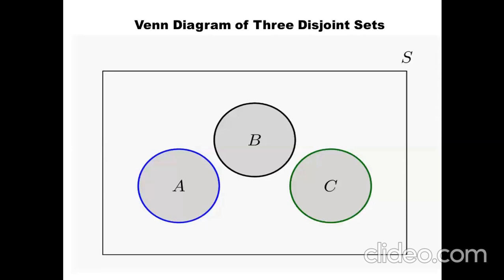So far we have discussed Venn diagrams of two sets, but in 8th class we also deal with three sets and perform operations on them. We can also identify relationships between three sets. If all three sets are disjoint, we show the Venn diagram with three separate non-overlapping circles — all three sets are mutually disjoint with no element common.